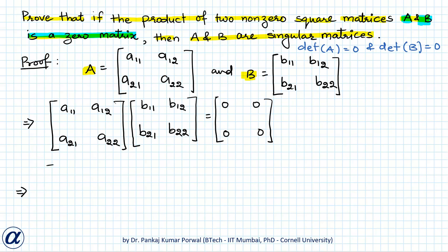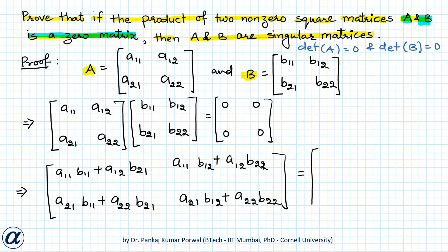This basically says that this term equals zero, this term also equals zero, this term also equals zero, and this term also equals zero. So let's write this equals to zero and this equals to zero as a group, and these two equations as another group.